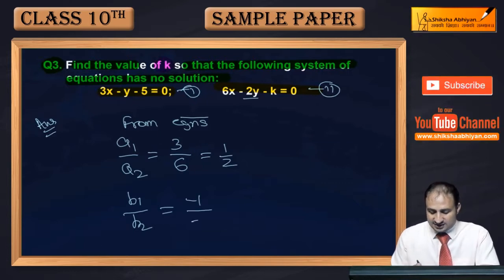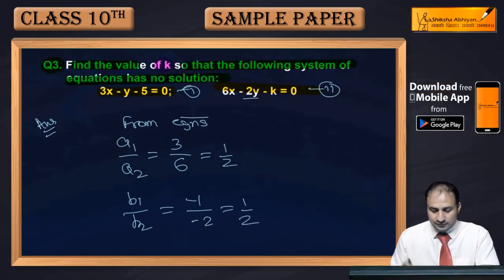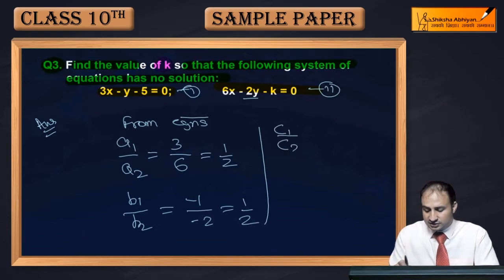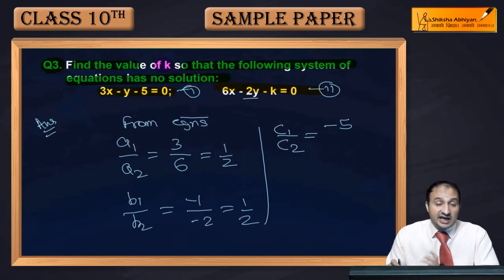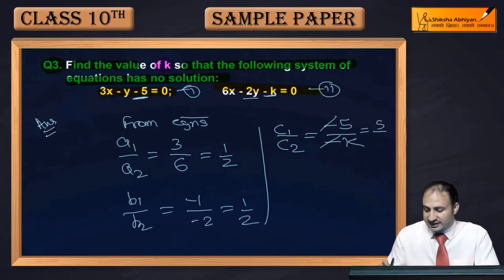c1/c2: the constant in the first equation is -5, and here the constant is -k. Minus on left side also, so -5/-k, the minus cancels out, this becomes 5/k. Now we have 1/2, 1/2, and 5/k.